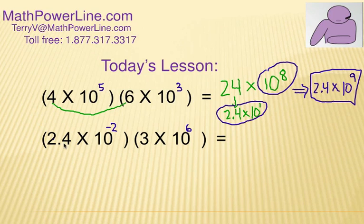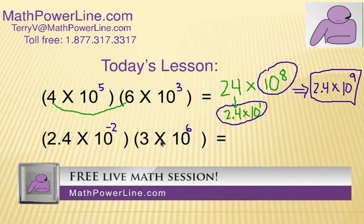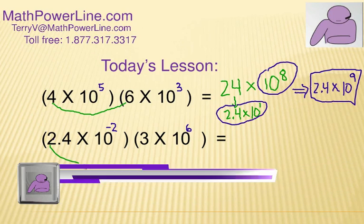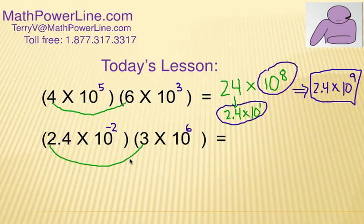In my second example, I have 2.4 times 10 to the negative 2 power times 3 times 10 to the 6th power. Well, the first thing we do, of course, is multiply those two numbers together, which will be 7.2, and then I multiply these two powers of 10 together. Remember to add the exponents, and I know it's a negative 2. Don't let that throw you off. That'll have to be times 10 to the 4th. Then you check it, one last glance,